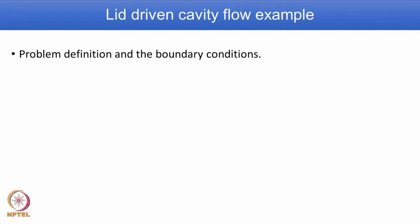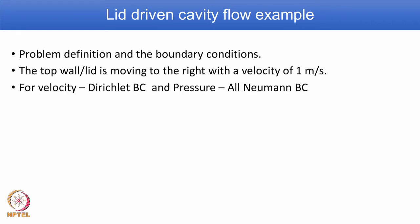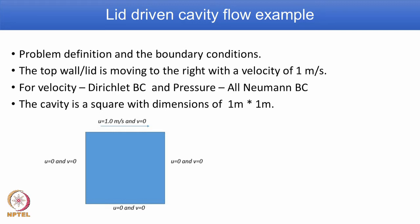The problem that we have considered in week 8 was the lid driven cavity example. We defined the problem, we defined the boundary conditions, we mentioned the top wall or the lid is moving from left to right with a specific velocity condition. And for velocity we used Dirichlet boundary condition and for pressure we used Neumann boundary condition. The cavity in a two dimensional situation is a square; if it is a three dimensional situation it becomes a cube with a dimension of 1 meter by 1 meter by 1 meter. And this is the illustration we used to explain the problem as well as the boundary condition implementation.